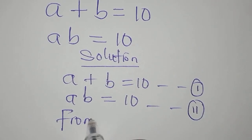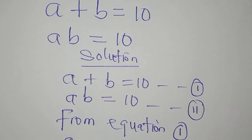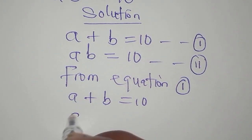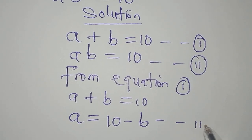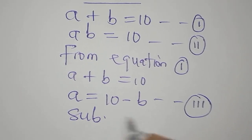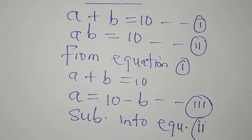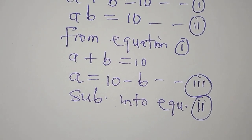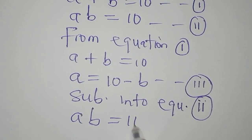From equation 1, a + b = 10, we can make 'a' the subject to get a = 10 - b. This will now be called equation 3. We're going to substitute this into equation 2. Equation 1 gave birth to equation 3, so we include equation 2 which is a·b = 10.